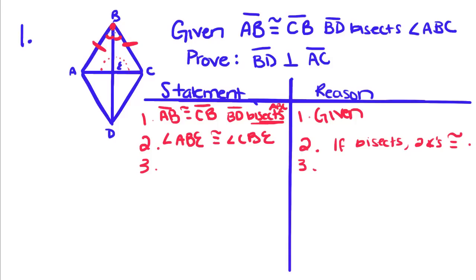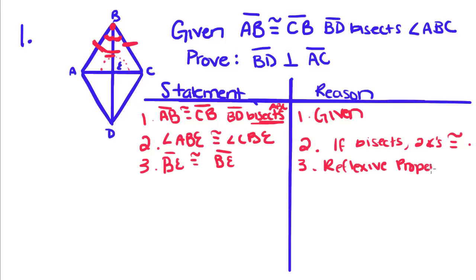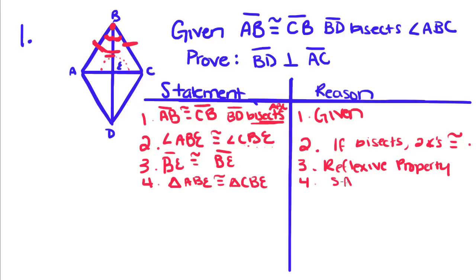Now we have a side and an angle congruent to a side and an angle. And if you look, they share side BE. We've used this many times — BE is congruent to BE — and that's the reflexive property. So now we can get these two triangles congruent: triangle ABE is congruent to triangle CBE, by side-angle-side.